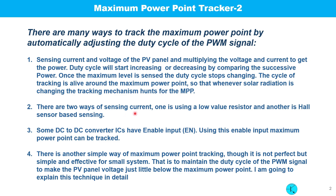There are two ways of sensing current: one is using a low value resistor, and another is a hall sensor based sensing. Another technique that small PV systems sometimes utilize involves DC-to-DC converter ICs that have an enable input. Using this enable input, maximum power point can be tracked.